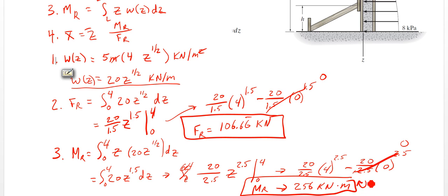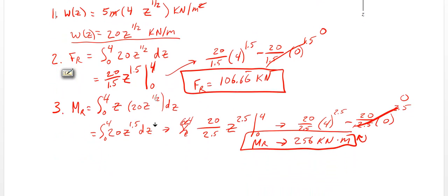And then lastly, so we've got step 3 done. Lastly, step 4, we're finding z-bar, which is going to be MR over FR. So I'll get a little more room here.